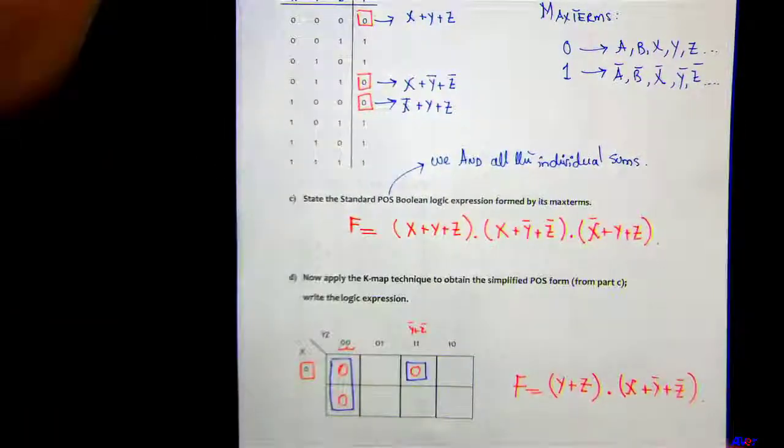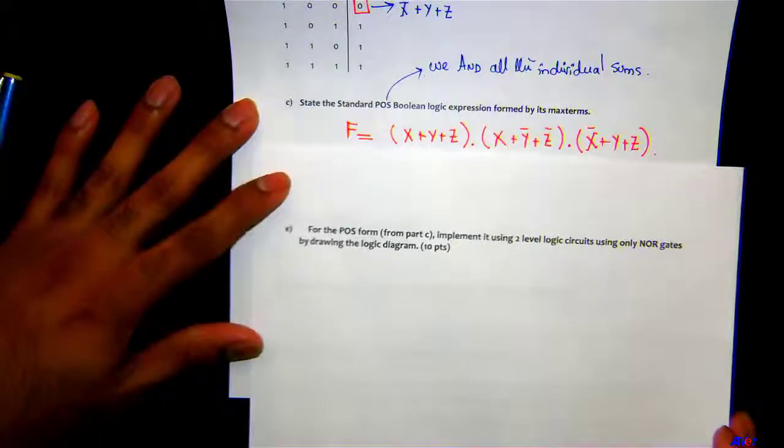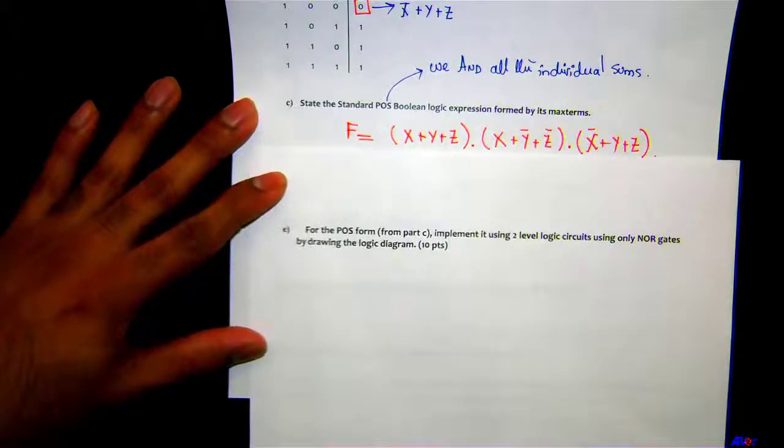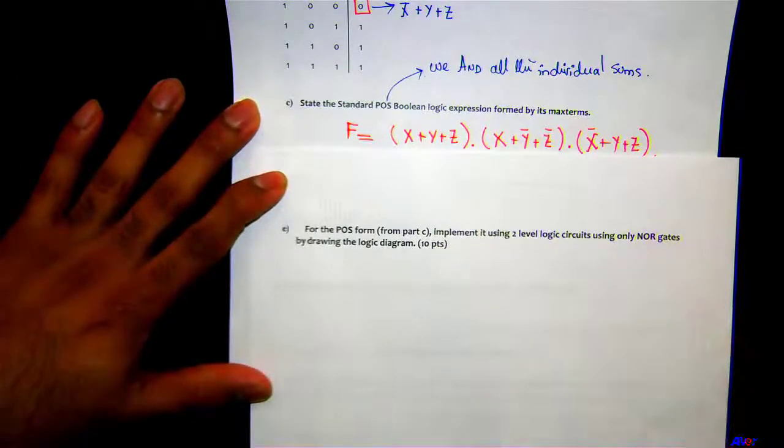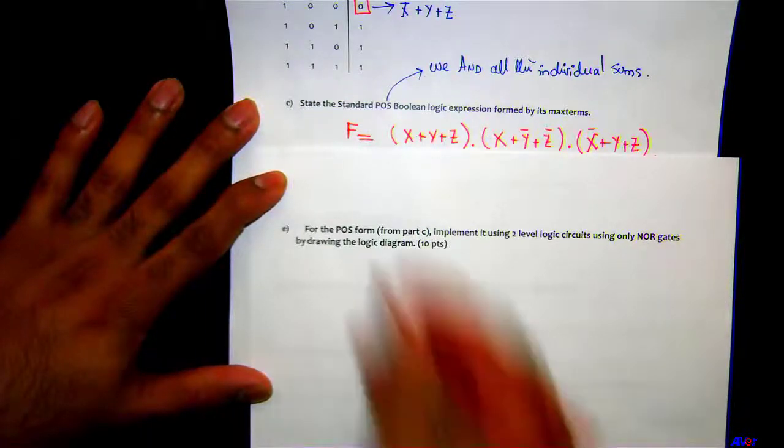Moving on to the last part, which was actually part E: for the POS form from part C, which is right here, implement it using two-level logic circuits using only NOR gates by drawing the logic diagram.